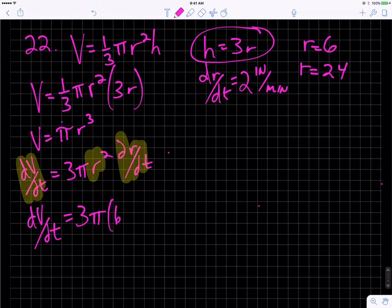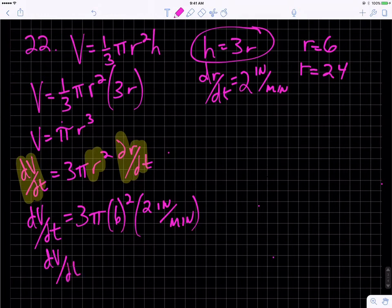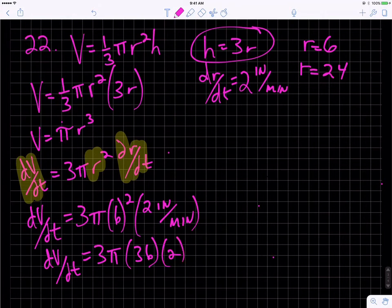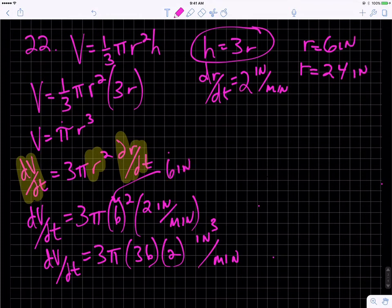When r is 6, that's our first situation, and we know dr/dt is 2 inches per minute. So then when I simplify, I get what dV/dt equals. So I've got 3π times 36 times 2, and that's inches per minute cubed—inches cubed per minute. That's because I should have put inches on the 6, and I plugged in the radius, so that should be 6 inches. And then when I square it, it's inches squared times the other inches makes inches cubed. So I get 6 times 36.